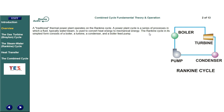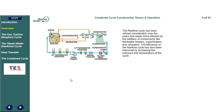The Rankine cycle in its simplest form consists of a boiler, a turbine, a condenser, and a boiler feed pump. The Rankine cycle has been refined considerably over the years and made more efficient by the addition of components like feed water heaters, superheaters, and reheaters. The efficiency of the Rankine cycle has also been improved by increasing the pressure and temperature of the cycle.